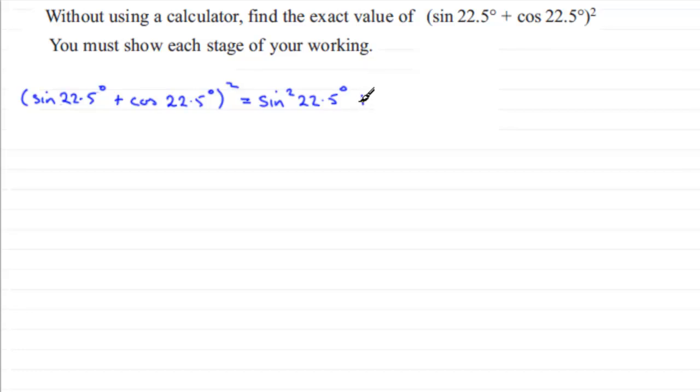Then we get plus twice the product of our terms. So it's going to be plus 2 sin 22.5° multiplied by cos 22.5°. Then we get the last term squared, so that's going to be plus cos² 22.5°.